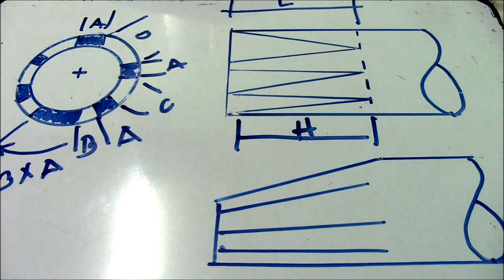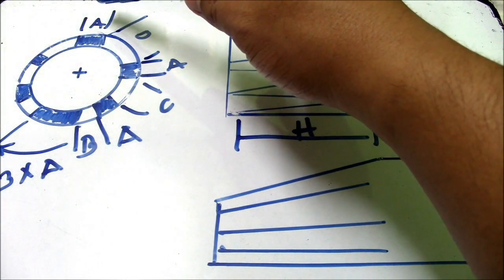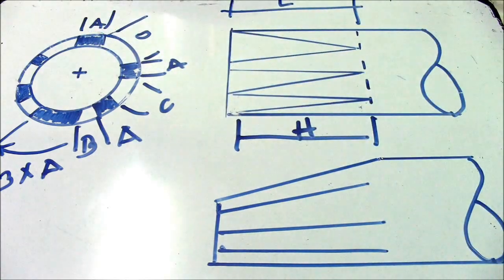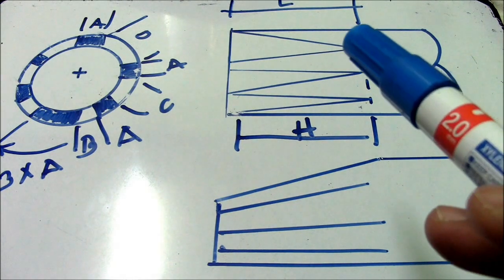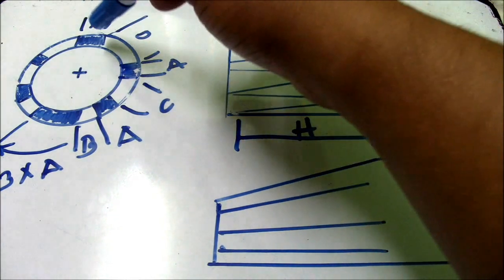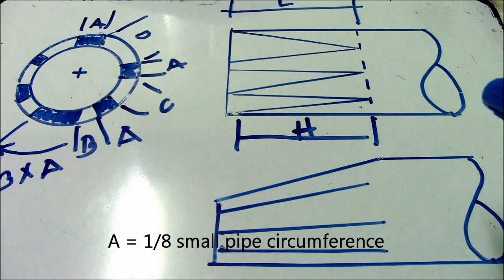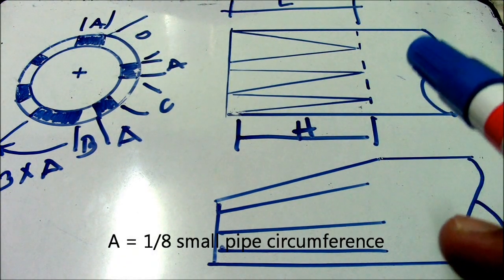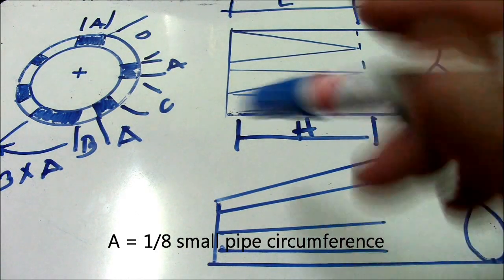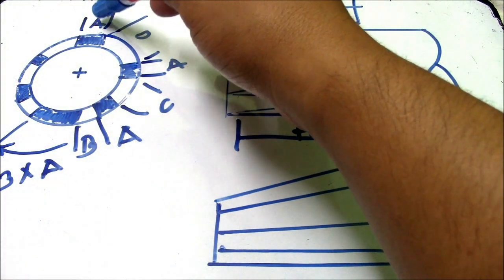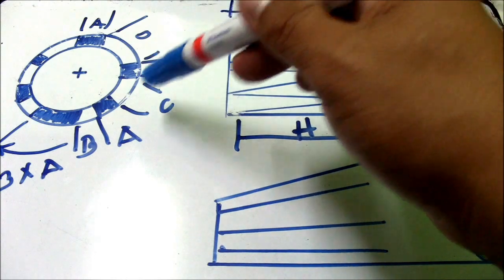The formula for this eccentric reducer: for letter A, how to compute dimension A — the formula is 1/8 of the small pipe circumference. So dimension A equals 1/8 of the small pipe circumference.